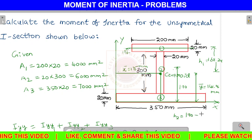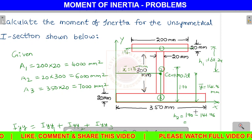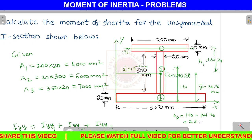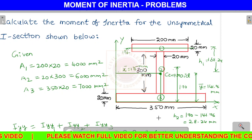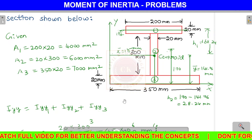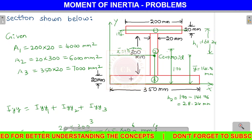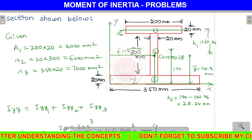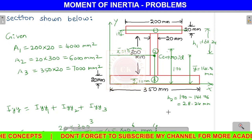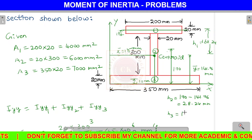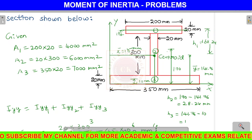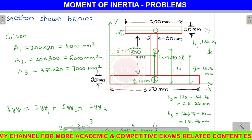For H2: the center of the web is at 150 mm from the bottom of the web. H2 = 170 minus 141.76 = 28.24 mm. For H3: the center of the bottom flange is at 10 mm from the bottom. H3 = 141.76 minus 10 = 131.76 mm.